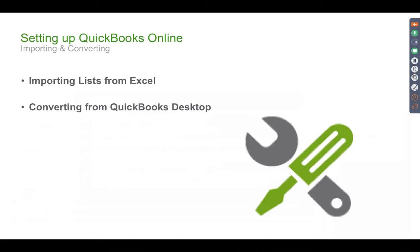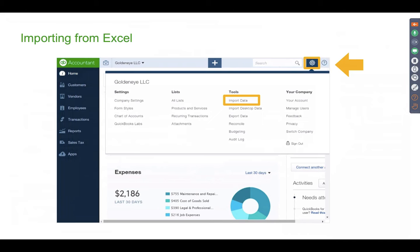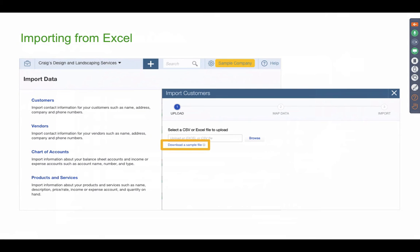When you first set up an account that isn't a 100% startup business, you typically have two choices: convert from QuickBooks Desktop if the client was using Desktop before, or import your list from Excel if they had an Excel-based or other accounting system exportable to Excel. If you're not uploading from Desktop, click the gear button, click Import Data, and it will ask whether you want to import customers, vendors, accounts, or products and services.